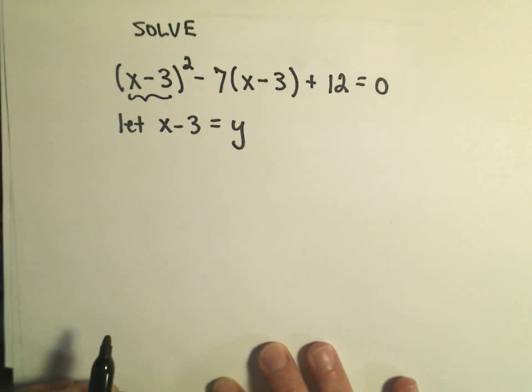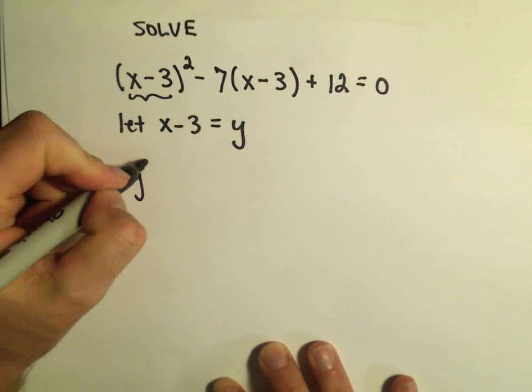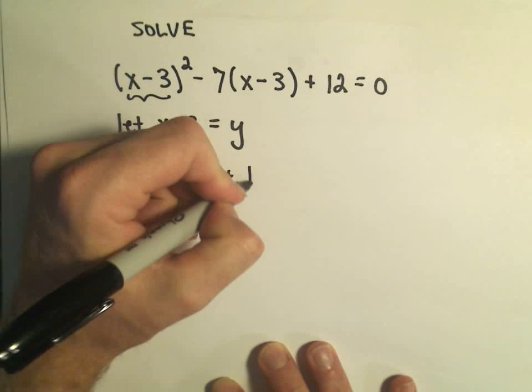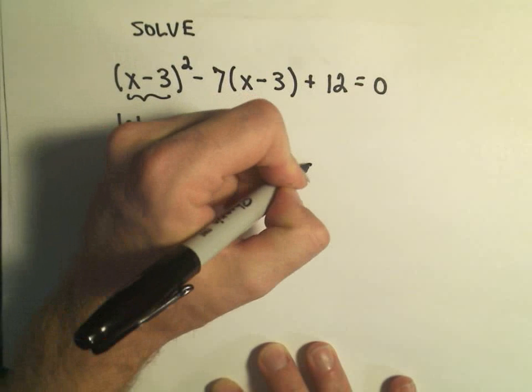So if we just do this relabeling, we can now rewrite this as y squared minus 7y plus 12 equals 0.